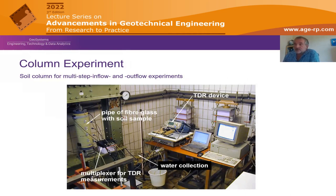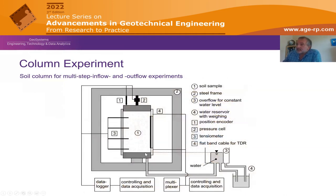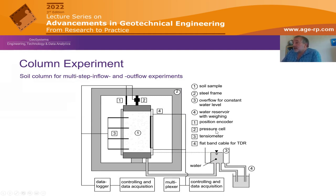The same spatial TDR system was also installed in a column experiment designed to determine the soil water retention curve for multi-step inflow and outflow experiments. The column setup included a ceramic plate to apply suction at the sample base, tensiometers at four locations, and a flat ribbon cable placed outside the sample. An overflow device controlled the hydraulic head at the bottom, and a water reservoir allowed measurement of cumulative in- and outflow into and out of the sample.